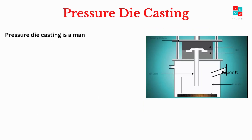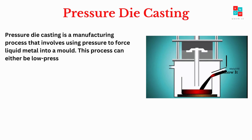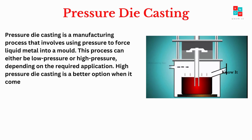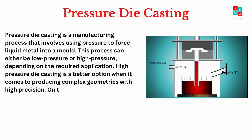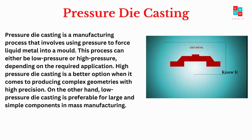Pressure die casting is a manufacturing process that involves using pressure to force liquid metal into a mold. This process can either be low pressure or high pressure, depending on the required application. High pressure die casting is a better option when it comes to producing complex geometries with high precision. On the other hand, low pressure die casting is preferable for large and simple components in mass manufacturing.